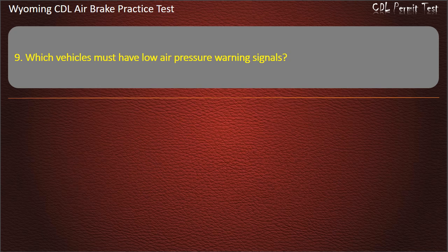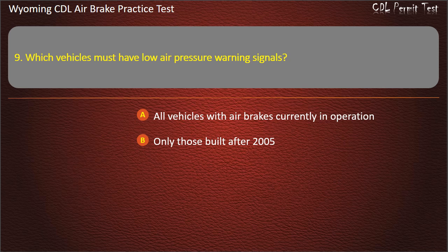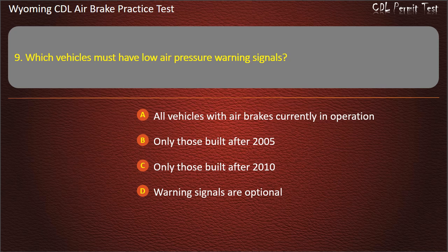Question 9. Which vehicles must have low air pressure warning signals? All vehicles with air brakes currently in operation. Only those built after 2005. Only those built after 2010. Warning signals are optional. Answer: All vehicles with air brakes currently in operation.